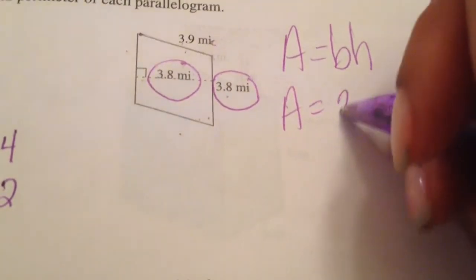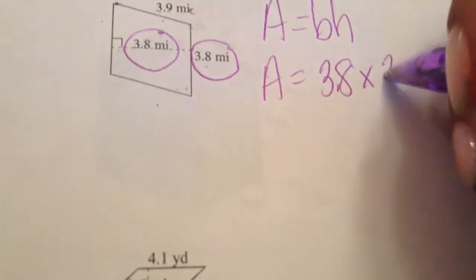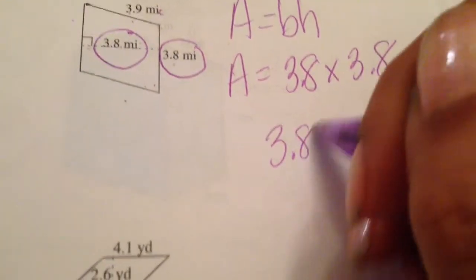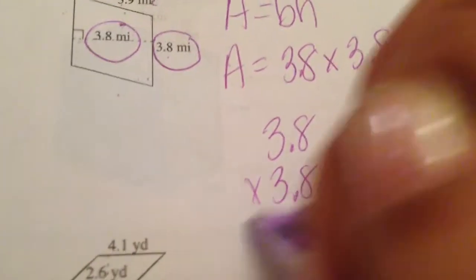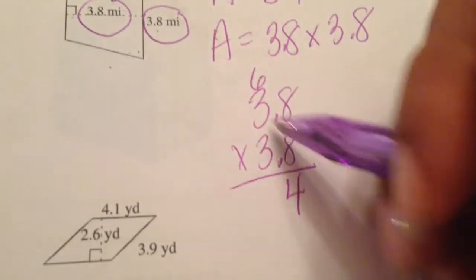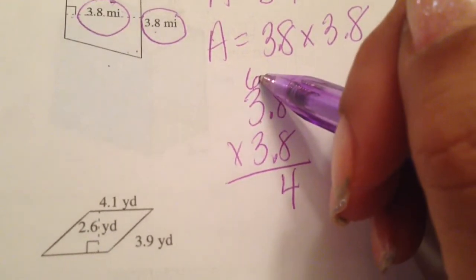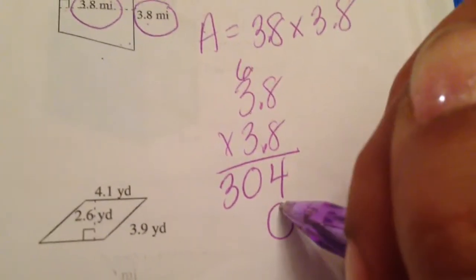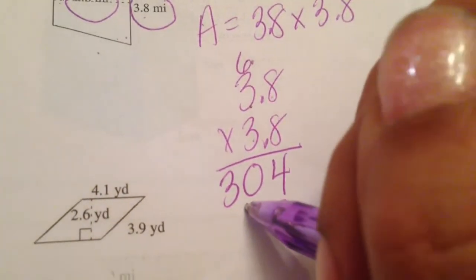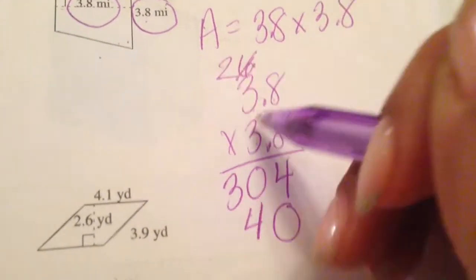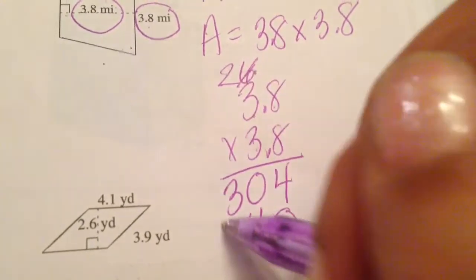So my area is equal to 3.8 times 3.8. 8 times 8 is 64. 8 times 3 is 24 plus 6 is 30. Placeholder, 3 times 8 is 24. 3 times 3 is 9 plus 2 is 11.